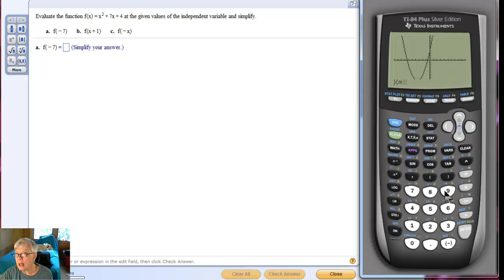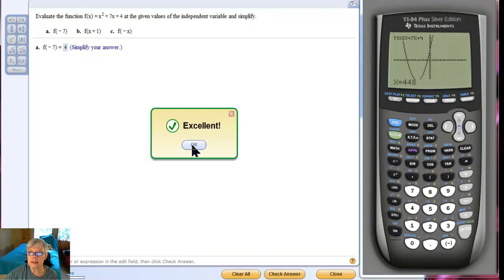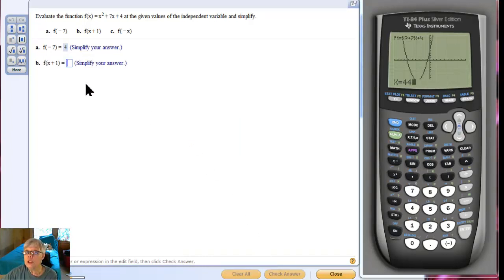I'm looking for the function value when x is negative 7. So, I'm going to click enter, and I'm going to click negative 7, enter, and I'm told that if x is negative 7, y is 4. So, I'm going to click 4. Excellent. Now, you put x plus 1 in both of those places, and you put negative x in there because I have nothing to write with. Talk to you later. Bye-bye.